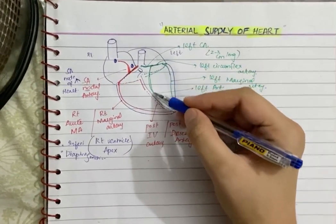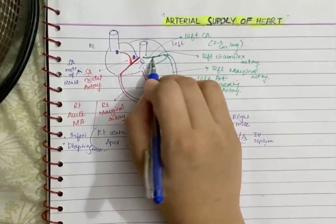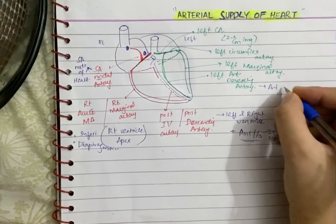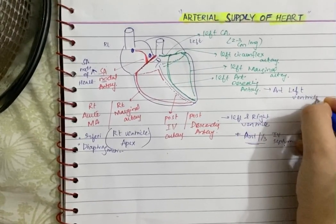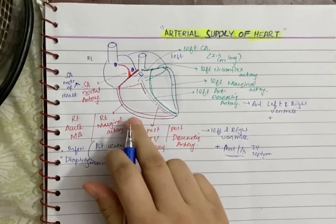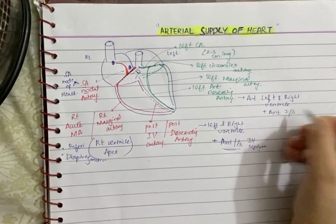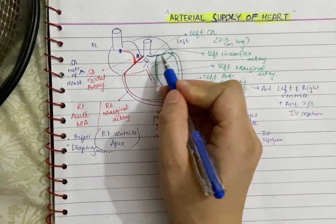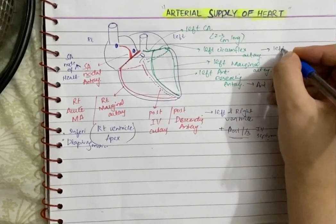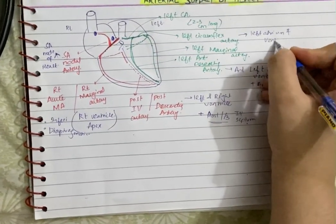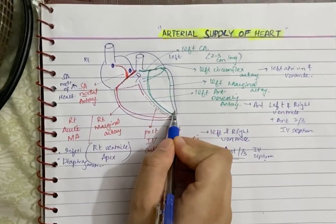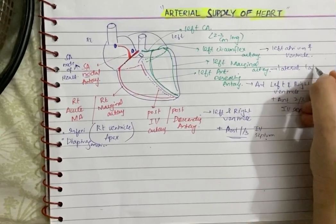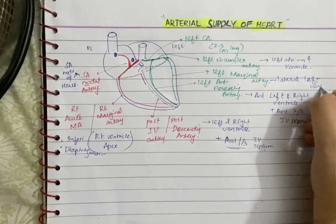The left anterior descending artery, a branch of the left coronary artery, supplies the anterior sides of the left ventricle and the right ventricle, plus the anterior two-thirds of the interventricular septum — while the posterior one-third is supplied by the posterior descending artery. The left circumflex artery supplies the left atrium and the left ventricle. The left marginal artery supplies the lateral part of the heart, mainly the left ventricle.